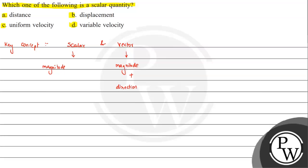For example, force is a vector quantity, and mass is a scalar quantity. Now looking at the question options, let's first talk about distance. Distance is defined as the actual path length travelled.